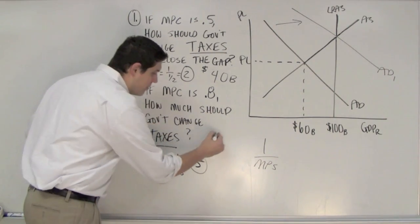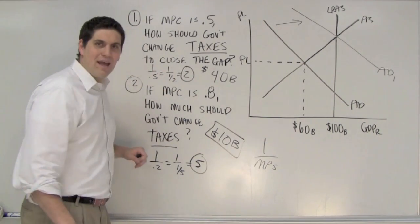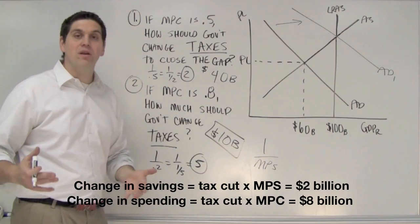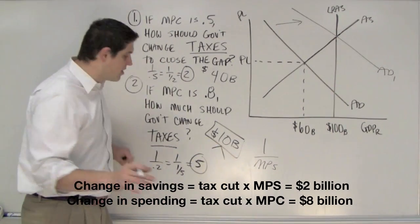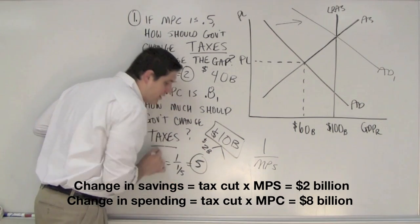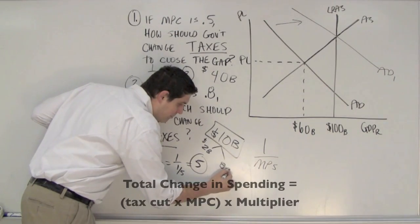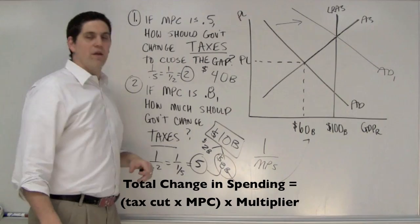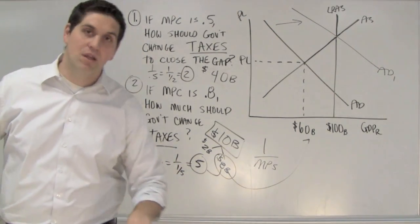The right answer is $10 billion. Here's why: when the government provides a $10 billion tax cut, people are going to save some of it. How much? They save $2 billion. How much actually gets spent? The other 0.8, which is $8 billion. $8 billion gets spent, multiplied times 5, closes the $40 billion dollar gap. The right answer was $10 billion. Hopefully it makes sense to you. Until next time.